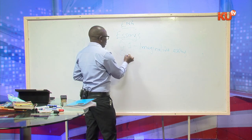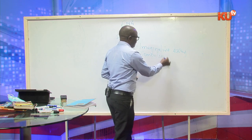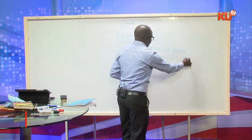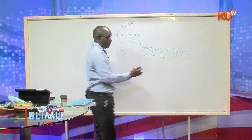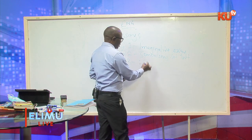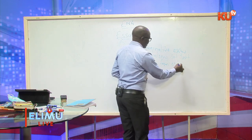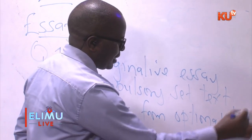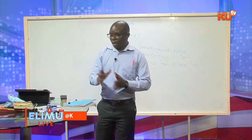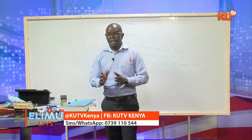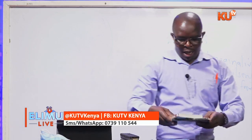Question two is an essay from a compulsory set of texts. Question three has three essays but you choose one — these are essays from optional texts. Unlike Swahili, English Paper 3 has five set books we are supposed to study in the course of the four-year journey. Two are compulsory, then the rest are optional.